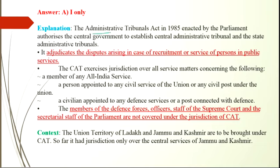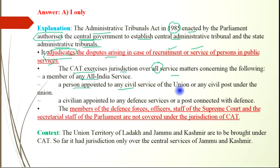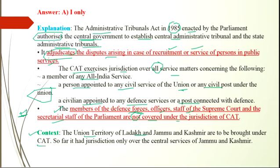The Administrative Tribunals Act 1985, enacted by Parliament, authorised the Central Government to establish the Central Administrative Tribunal and State Administrative Tribunals. It adjudicates disputes arising in the case of recruitment or service of persons in public services. CAT exercises jurisdiction over members of any All India Service, persons appointed to any civil services of the Union or any civil force under the Union, and civilians appointed to any defence services. However, members of defence forces, officers and staff of the Supreme Court, and secretarial staff of Parliament are not covered under the jurisdiction of CAT. Notably, the union territories of Ladakh and Jammu & Kashmir are to be brought under CAT, as so far it has jurisdiction only over the central services of Jammu and Kashmir.